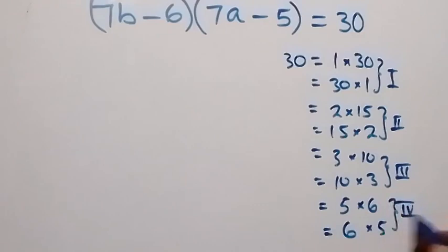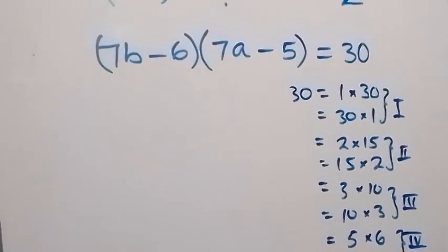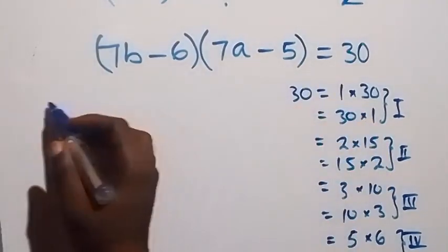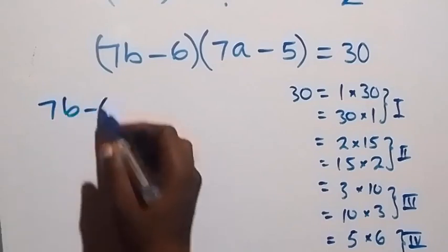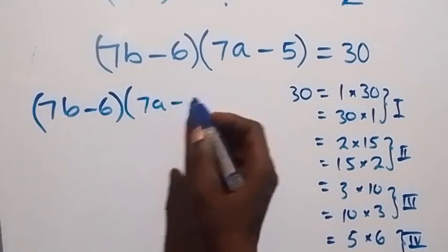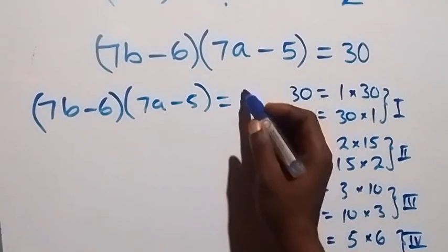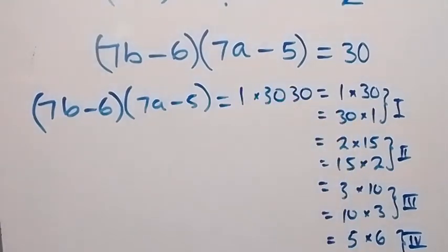Also we have Case 4 from here. Now looking at Case 1, it implies that the product (7b minus 6) times (7a minus 5) could equal 1 times 30.